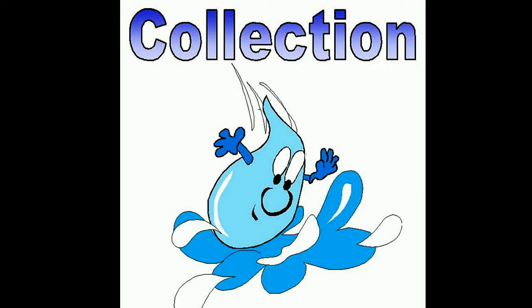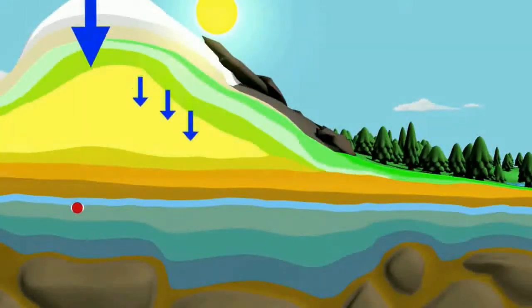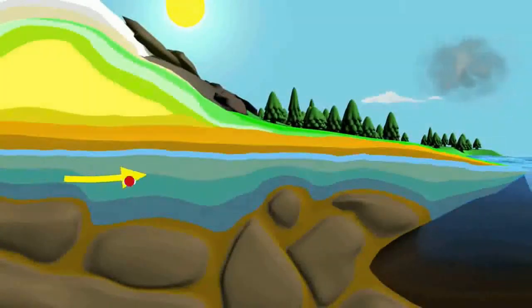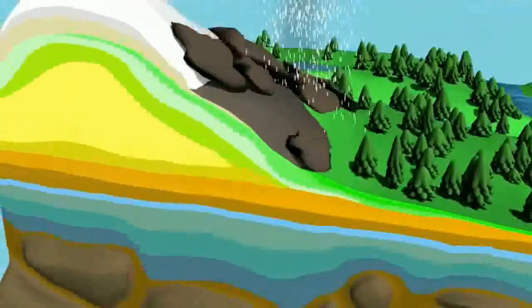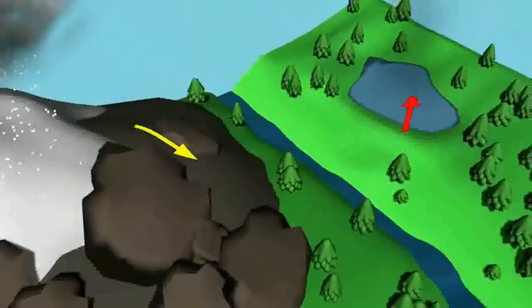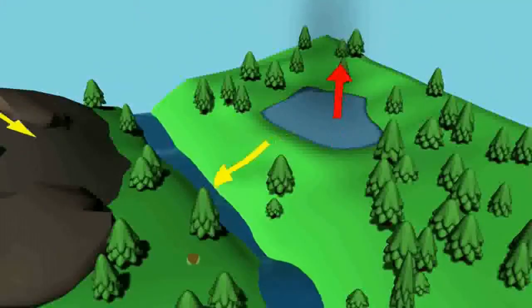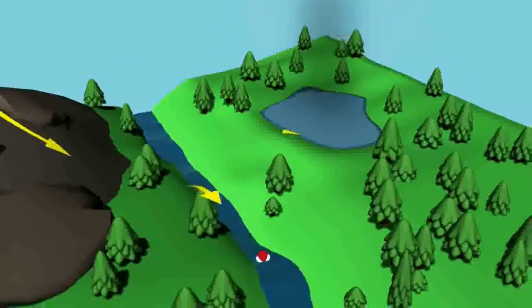When the water falls back to Earth as precipitation, it may end up back into the lakes, oceans, or rivers. It may also end up on land. When it ends up on land, it will either soak into the Earth and become part of the groundwater that plants and animals use to drink, or it may run over the soil and collect in the bodies of water while the cycle starts all over again.